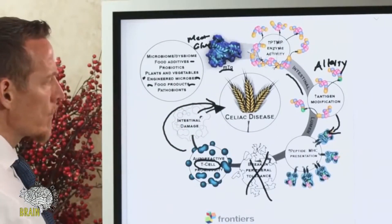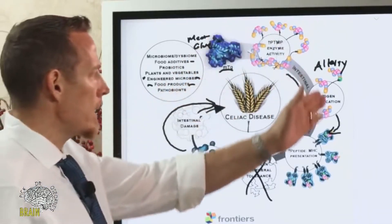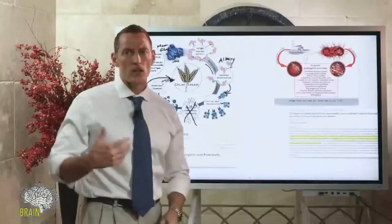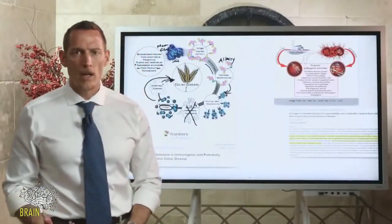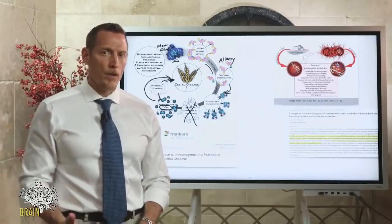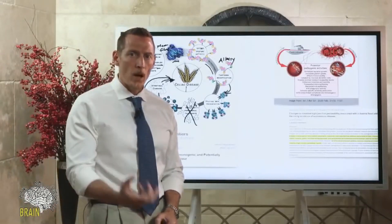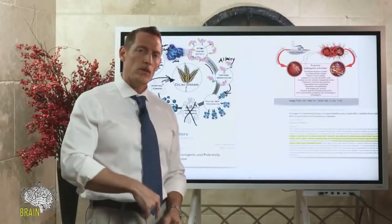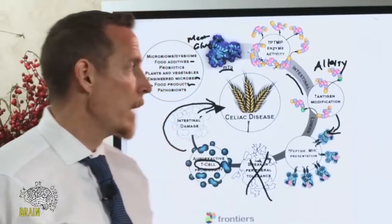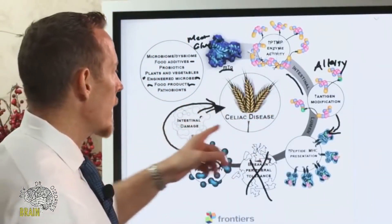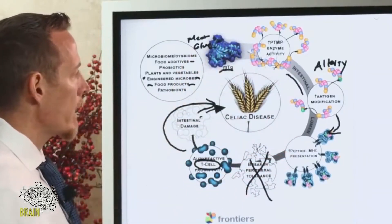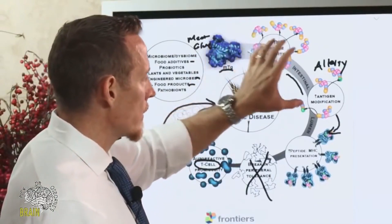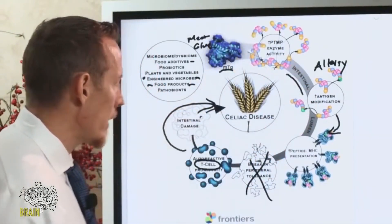The byproduct of that immune response is intestinal damage that can actually mimic celiac disease. So not only may you already have celiac disease from gluten exposure, but eating these types of foods can contribute to celiac-like disease. Meat glue has actually been identified as a trigger for villous atrophy. Even if you're not gluten-sensitive or celiac, you may still be developing intestinal damage as a result of how the body processes meat glue and how it changes proteins inside the GI tract.